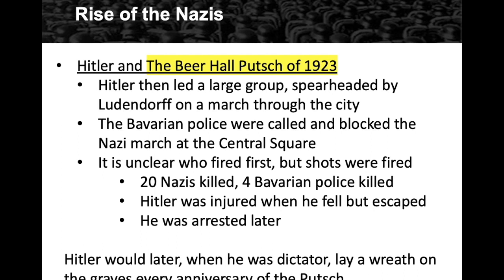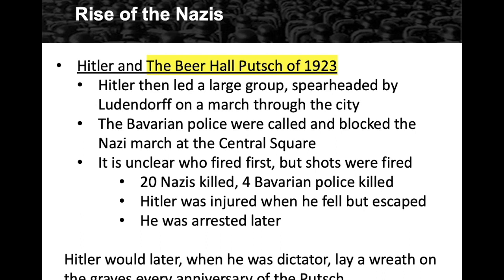Hitler was injured — he fell against the curb — but was whisked away and later arrested. Another important Nazi who was shot during the Putsch was Hermann Göring, who became second-in-command of the Nazi state and leader of the Luftwaffe in World War Two. Göring survived after surgery. Later, when Hitler was dictator, he would lay a wreath on the graves of the Nazis killed during the Putsch, holding those who fought and died with great esteem as the core of Nazi belief.